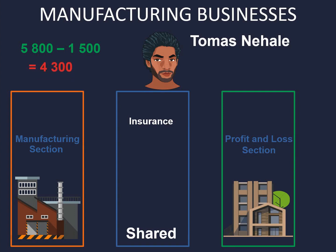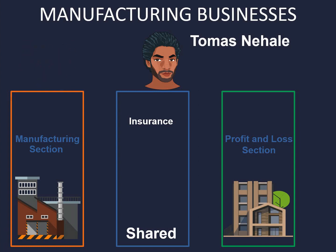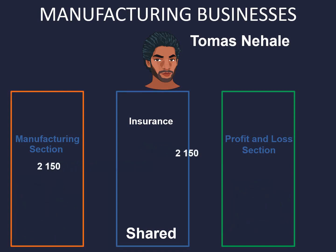Now we need to divide that by two because the insurance is apportioned equally, and that will give us 2,150. So at the end of the day, 2,150 will go to the manufacturing section and the same amount, 2,150, will go to the profit and loss section.